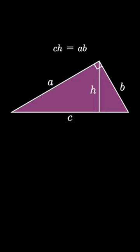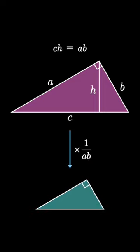This means that C times H equals A times B. Now we scale the right triangle by the quantity 1 over A times B, which produces a right triangle with side lengths of A over A times B, B over A times B, and a hypotenuse of C over A times B.